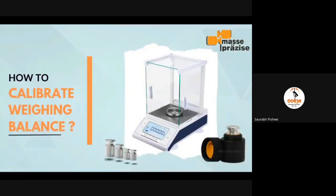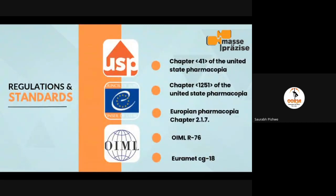The next part is how to evaluate weighing balances. There are some guidelines provided by various organizations, and different types of organizations follow different guidelines. For calibration laboratories, specifically ISO 17025 accredited calibration laboratories, there are requirements like OIML R111 or OIML R76 — R111 is for balance calibration and R76 is for weight calibration.